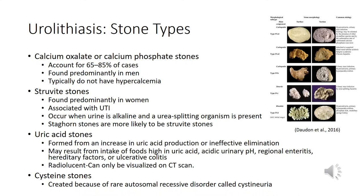Calcium oxalate or calcium phosphate stones are the most common types, predominantly found in men, and directly correlate with diet — high sodium intake and inadequate hydration. Struvite stones are responsible for the nasty staghorn stones; they are associated with urinary tract infections and occur when the urine is alkaline and a urea-splitting organism is present.